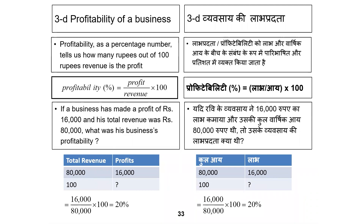We will see what profitability means and how to use it. When we say there is 20% profitability in a business, we can say that if you have earned $100 from customers — which we call revenue — after paying all your costs, you will save $20. This means profit is 20% of revenue, which is 20% profitability.